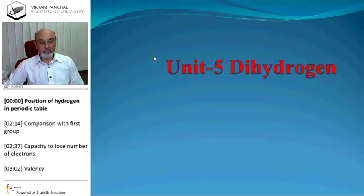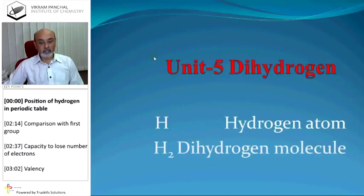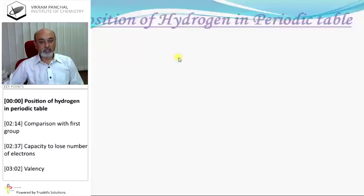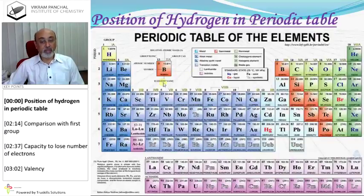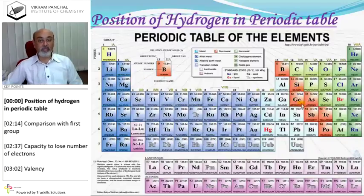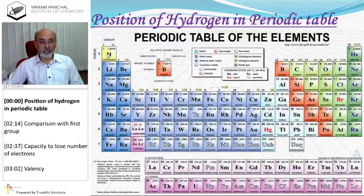Dihydrogen. Position of hydrogen in the periodic table. This is the modern periodic table or long form periodic table. The arrangement of atoms in the periodic table is related to their atomic number. Hydrogen is number one, so it is given the first position.